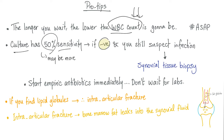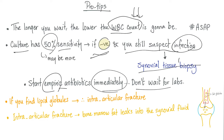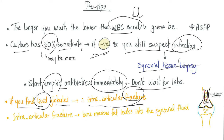So if the culture is negative and you still suspect infection, order a synovial tissue biopsy. But you should start empiric antibiotics immediately and don't wait for the lab tests. If you find lipid globules on joint fluid aspiration, it means there is an intra-articular fracture. The bone contains bone marrow, which contains fat globules. When you have a fracture, these fat globules spread from the bone marrow into the intra-articular joint space — so you'll have lipid globules on joint fluid aspiration. Intra-articular fracture: the bone marrow fat leaks to the synovial fluid.